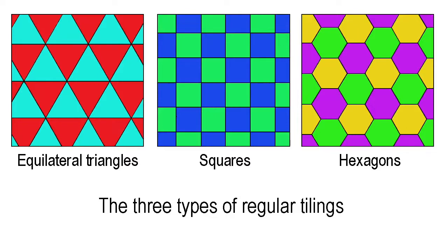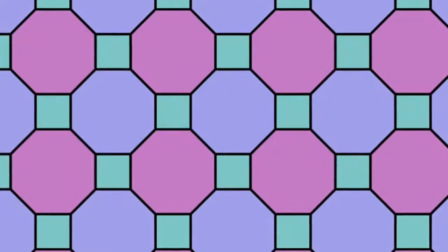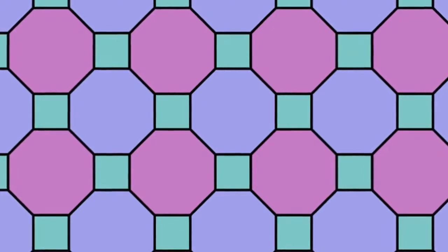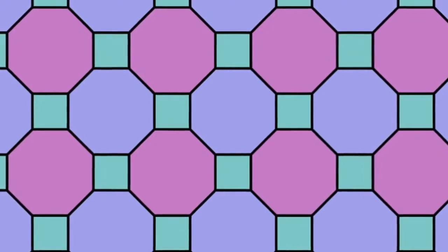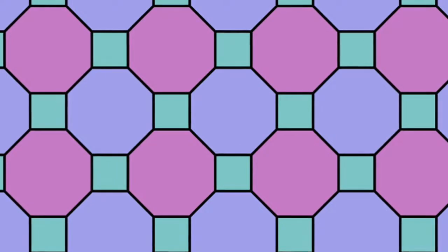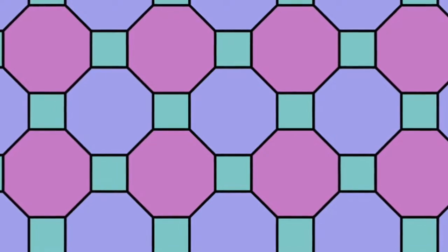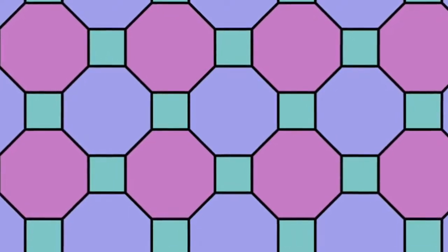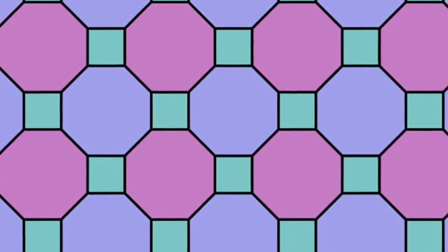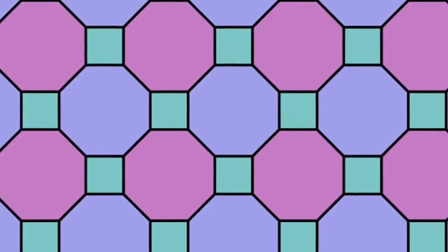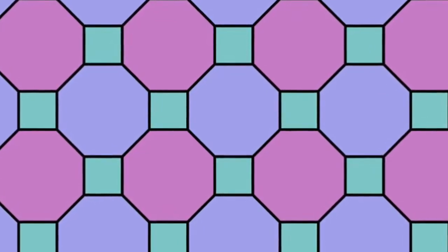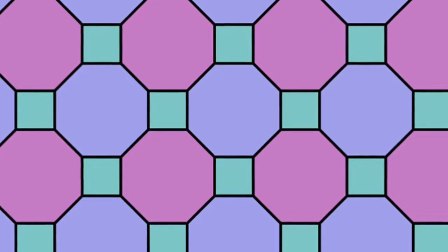A semi-regular tiling is also built up from regular polygons but of more than one variety, and in such a way that the arrangement of polygons at every vertex is identical. There are eight of these in all, or nine if you include the tilings of equilateral triangles and hexagons that are mirror images of each other.